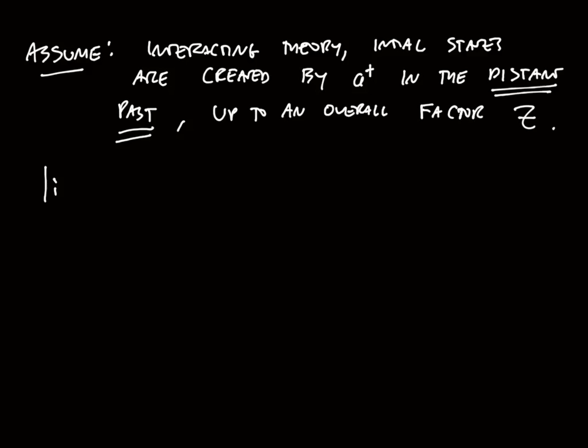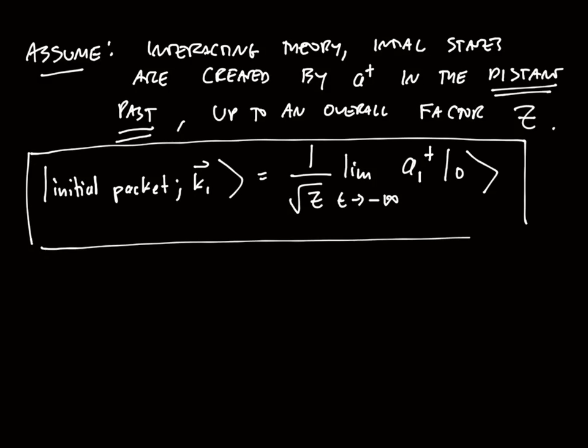In other words, my initial state is given in the following way: if I want to have an initial state with a wave packet around k₁, then that initial state is given by 1 over the square root of z, limit as t goes to minus infinity of a₁ dagger acting on the vacuum. This is in a sense an assumption, but basically this assumption means that the asymptotic structure of the states is not completely destroyed by the interaction. You have to make such an assumption to make progress. It may not be clear, but this z turns out to be exactly the same z that we talked about earlier when discussing the spectral density. It is really just the probability that you make the initial state using your field φ.